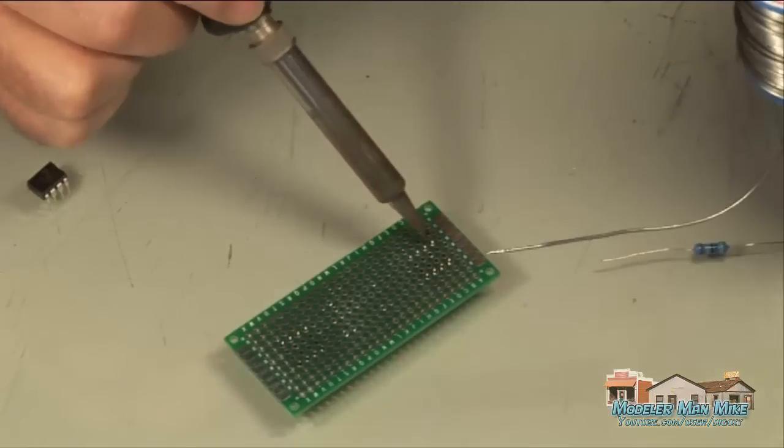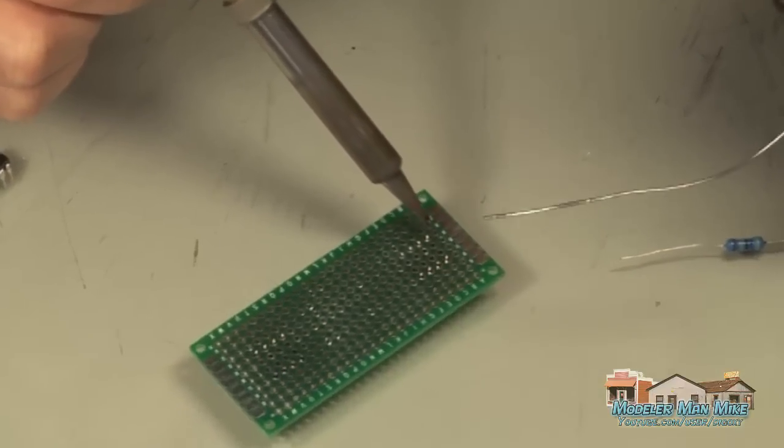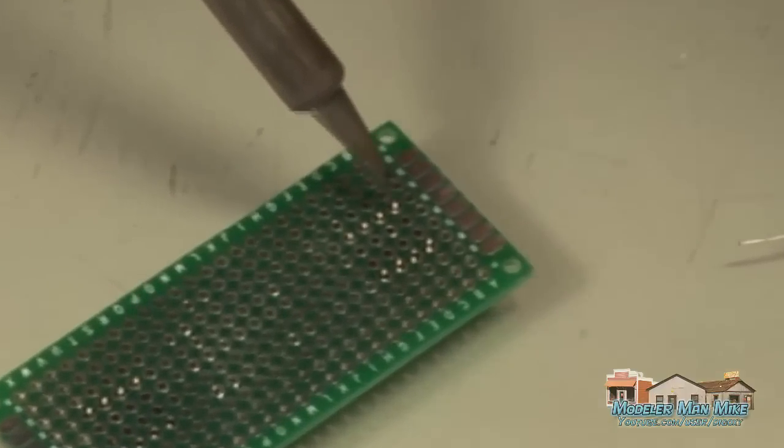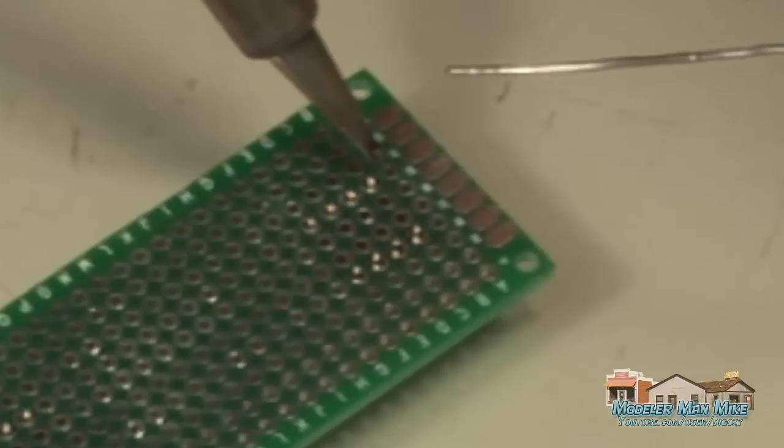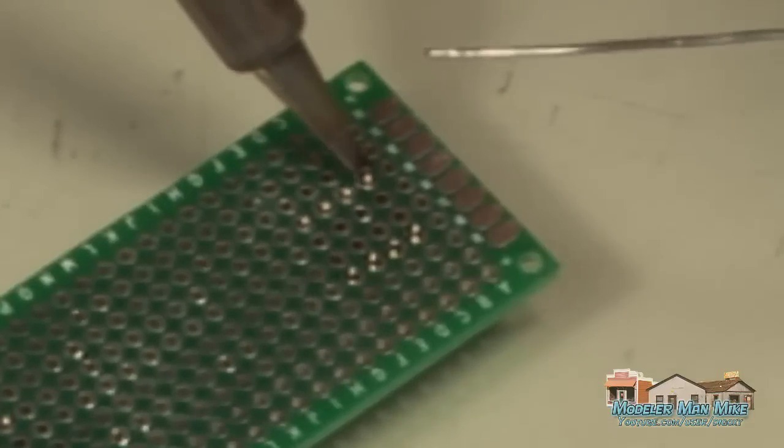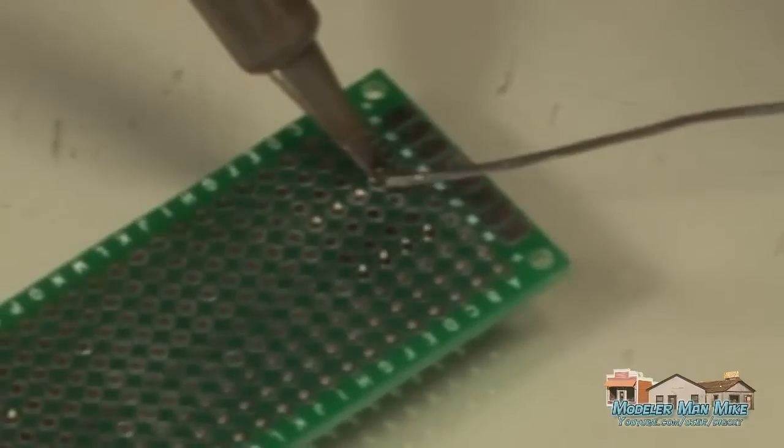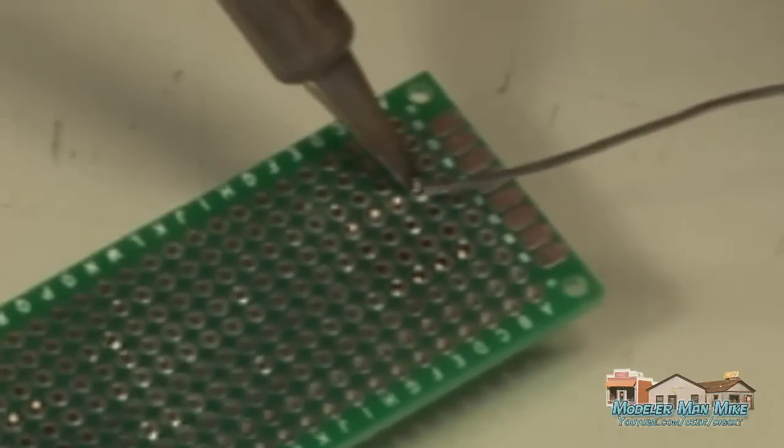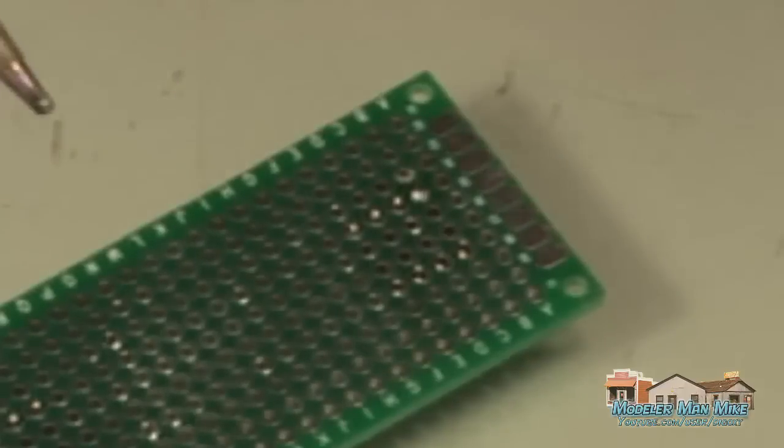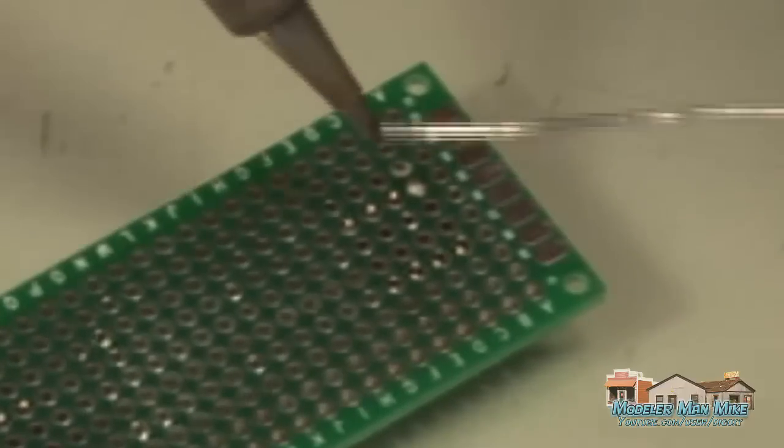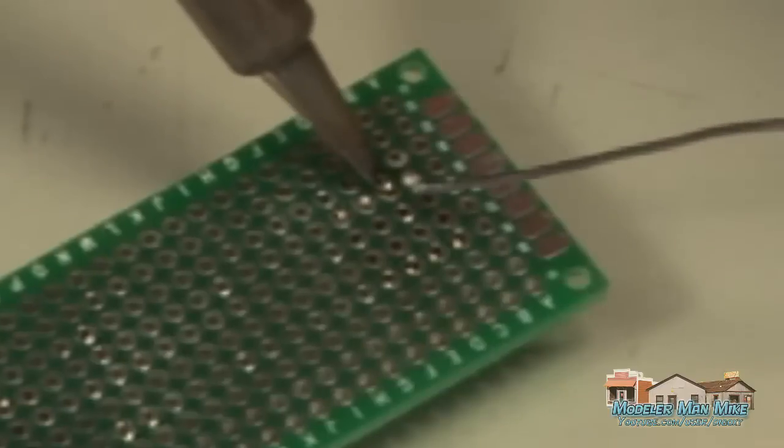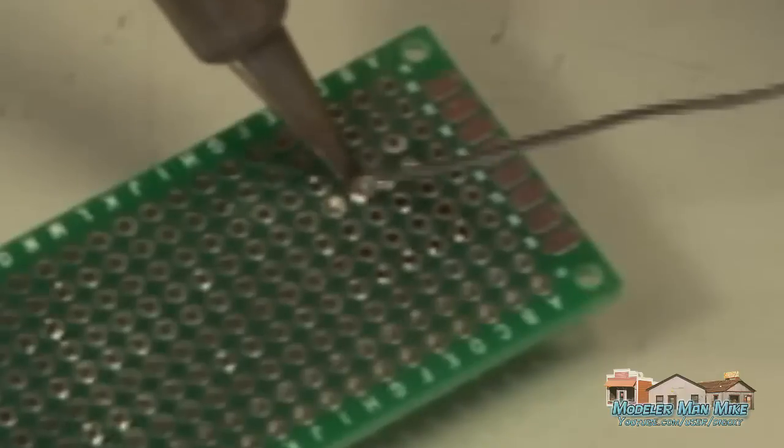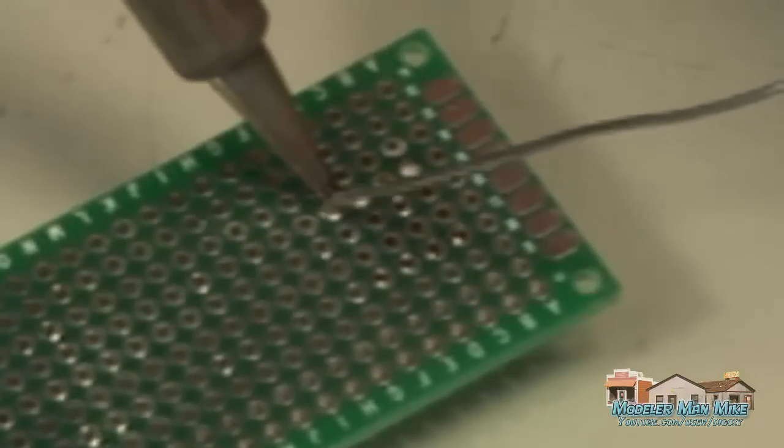The first thing I do is set the solder and iron down. Heat the pad and the pin. And as soon as I see that solder melt on the pad, I hit it with just a little bit of solder which completes the solder. So I'm just applying very little solder here. I already started with some on the joint and some on my iron. So this allows me to zip through pretty quick here.